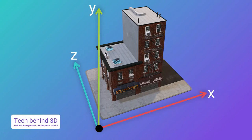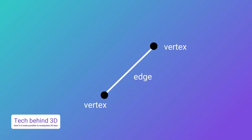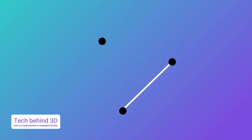We have points that we call vertices. If we link two points together, we have what we call an edge. Two edges create a triangle — we call that a face or even a polygon. You put enough polygons together and you have a 3D model.